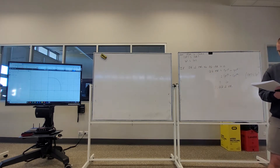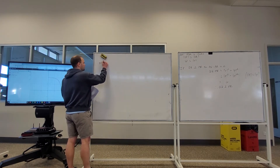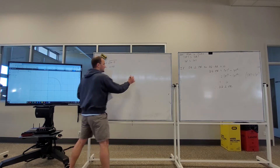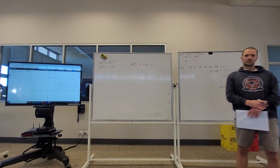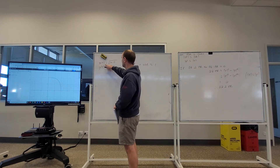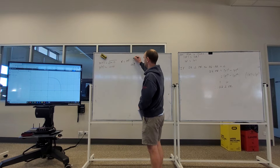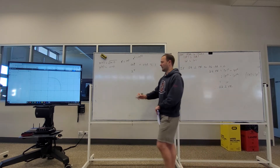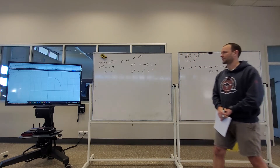Show that all points on the curve satisfy x to the 4 plus y squared equals 1. We've got x(T) is the square root of cos T and y(T) is sine of T. The link is cos squared T plus sine squared T equals 1. If x(T) is the square root of cos T, then x squared equals cos T, so x to the 4 equals cos squared T. And y squared equals sine squared T. Therefore x to the 4 plus y squared equals 1.